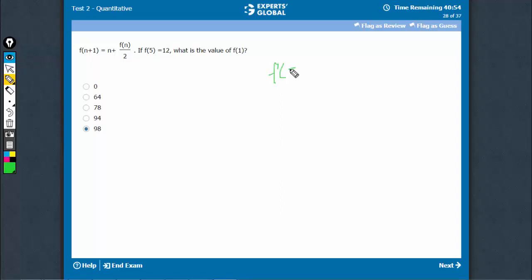So F5 is equal to 12. F5 can be written as F4 plus 1. So N is equal to 4 here, 4 plus F4 upon 2.